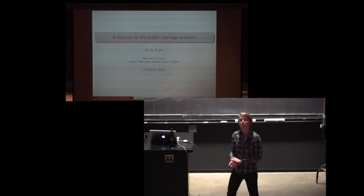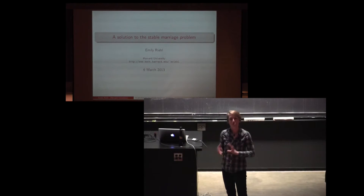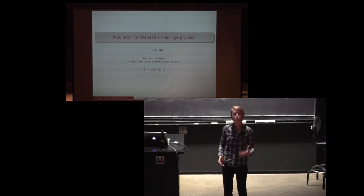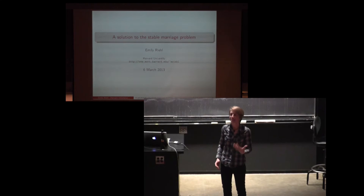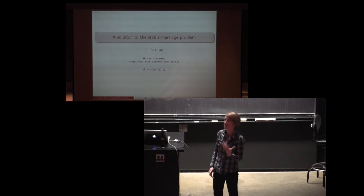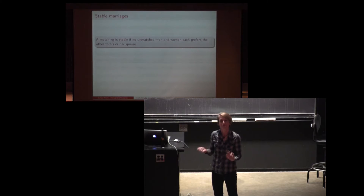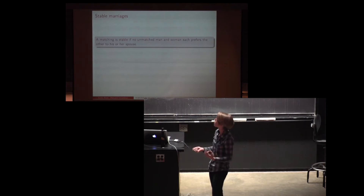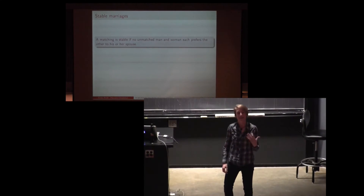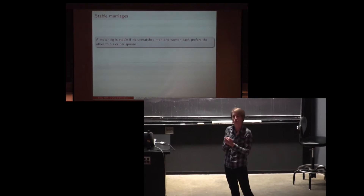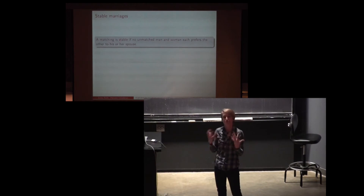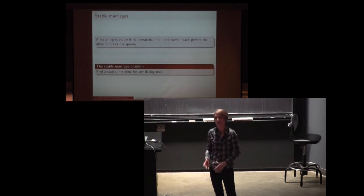Today I'm going to talk to you about a solution to the stable marriage problem, which I should start by defining. So imagine we have a dating pool of single men and single women. The objective is to marry everybody in such a way that there's no temptation for an unmatched couple to elope. Formally, a matching is stable if no unmatched man and woman simultaneously prefer each other to their assigned spouses. The problem is to find a stable arrangement.